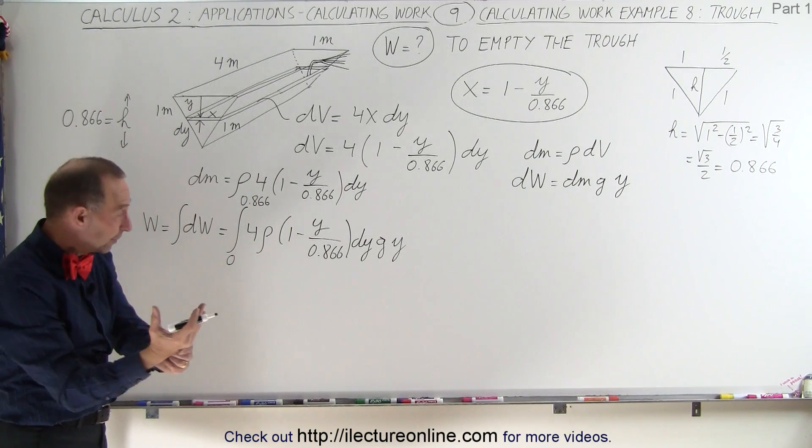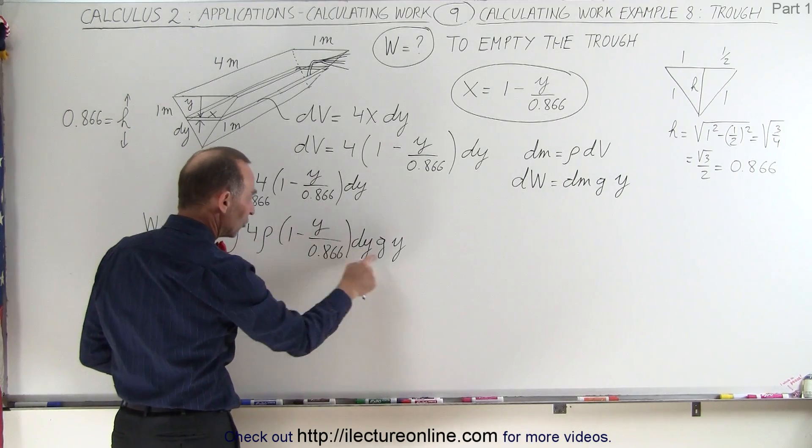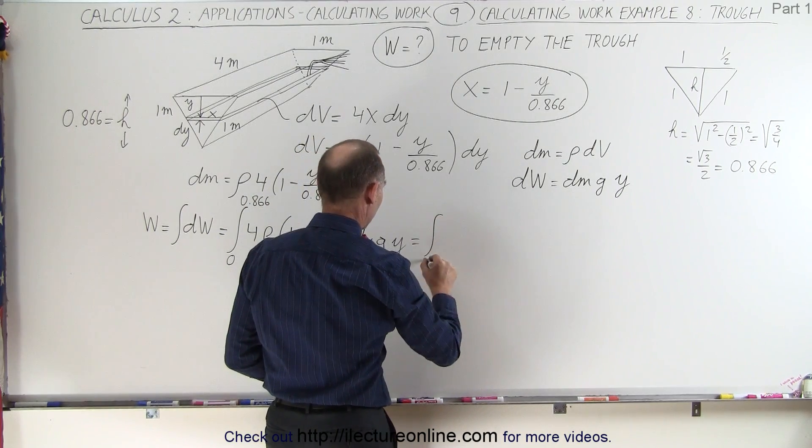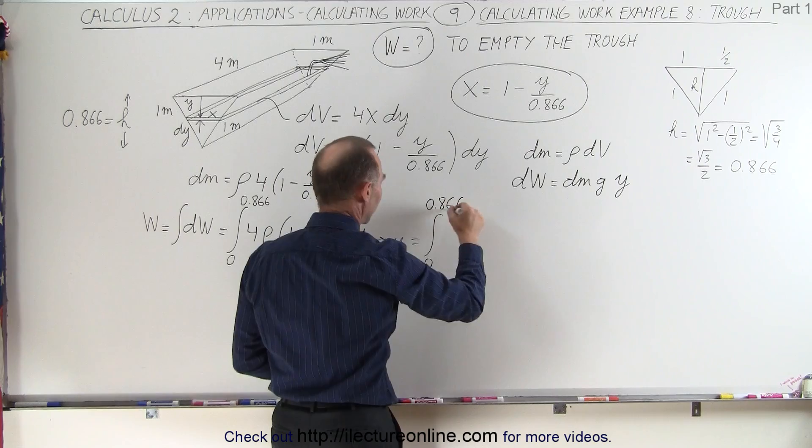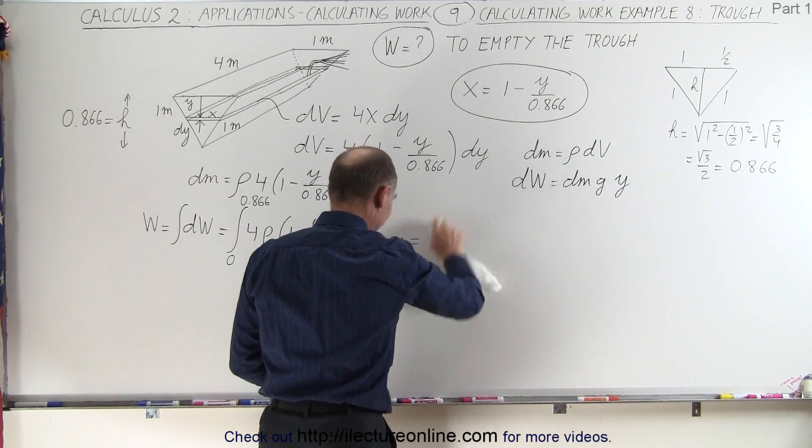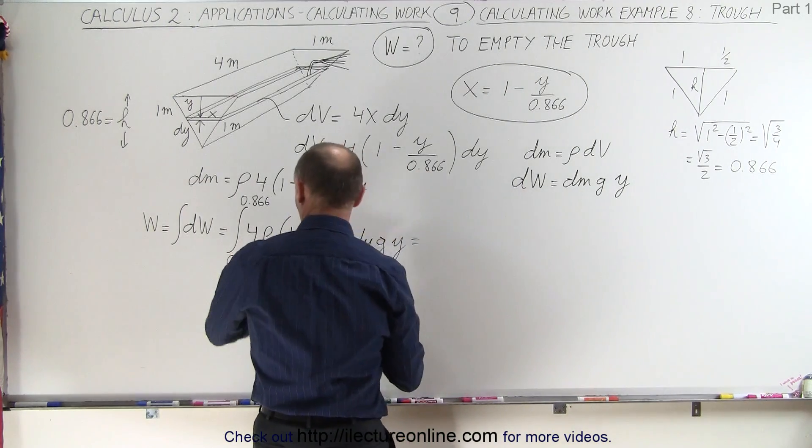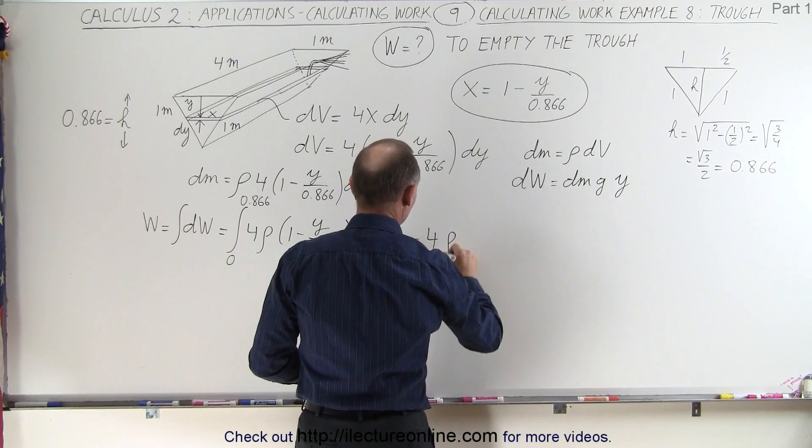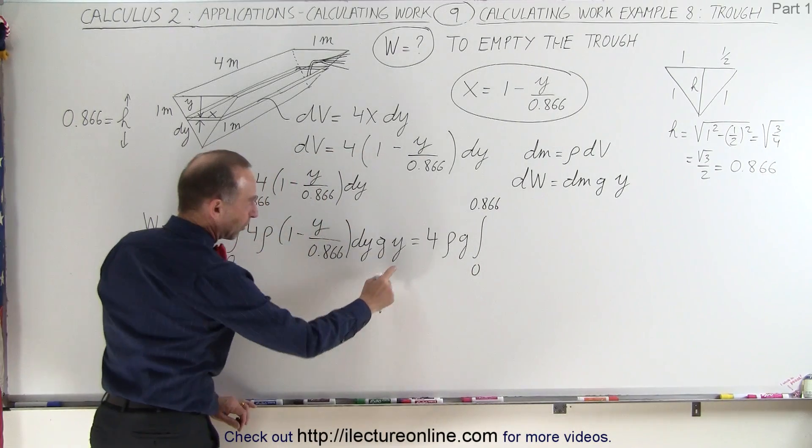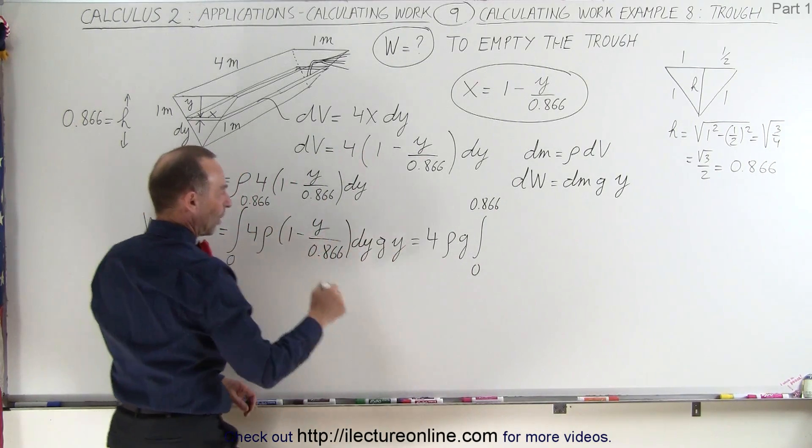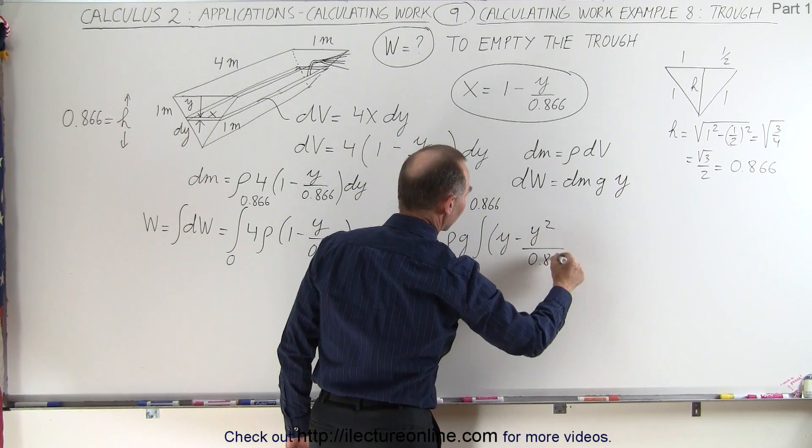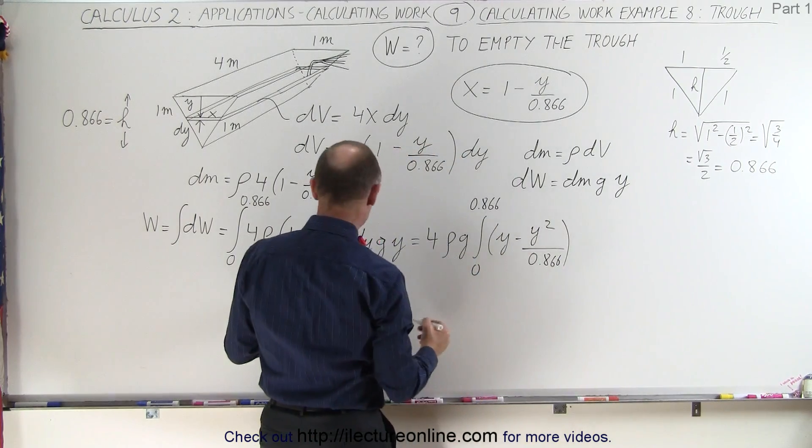And one more thing is, let's go ahead and take all the constants out. The density and g can all be taken out, and the y can be multiplied by this. So this can be equal to the integral from 0 to 0.866. I didn't leave enough room for my constants. So let's take the constants out. It's 4 times the density times g times integral from 0 to 0.866, and then we're going to multiply this y times the 1, and this y times this y. So this will be the quantity y minus y squared over 0.866, times dy.